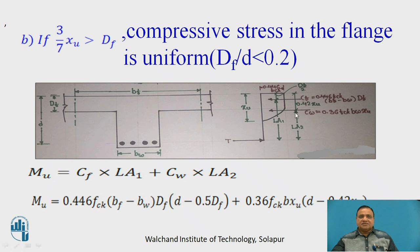Then the second case: if 3 by 7 Xu is greater than Df, the compressive stress in the flange is uniform. Here you can see this is Df. 3 by 7 Xu is greater than Df. Therefore, entire compression flange is in compression.